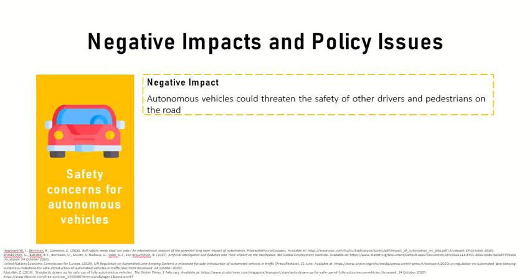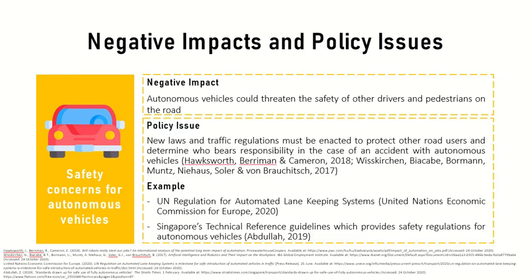Advanced robotics has also led to safety issues, as autonomous vehicles could threaten the safety of other drivers and pedestrians on the road. Policy issues include what new laws and traffic regulations must be enacted to protect other road users and determine who is responsible in the case of an accident with autonomous vehicles. Examples of these policies are the UN regulation for automated lane keeping systems, which 60 countries agreed to, and Singapore's technical reference guidelines which provide safety regulations for autonomous vehicles.